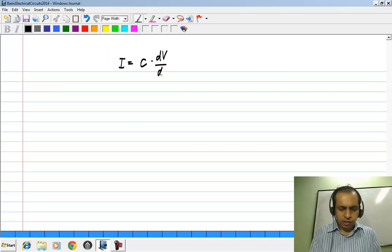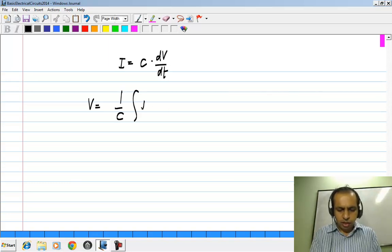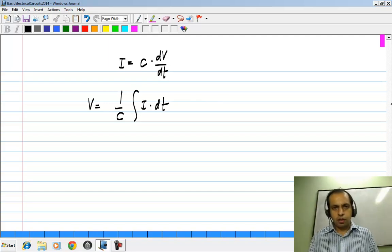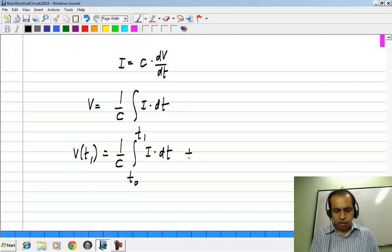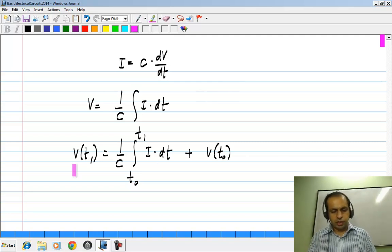I is given by C dV by dt, and if you invert this, we get the voltage to be 1 over C integral I dt. Now if I carry out the integral from some T naught to T 1, what it says is, V of T 1 is 1 over C integral I dt plus V of T 0. That is the change in the voltage between T 0 and T 1 is the integral of the current, which is the charge accumulated between T 0 and T 1 divided by the capacitance C.